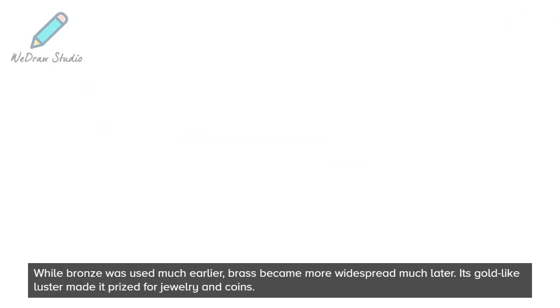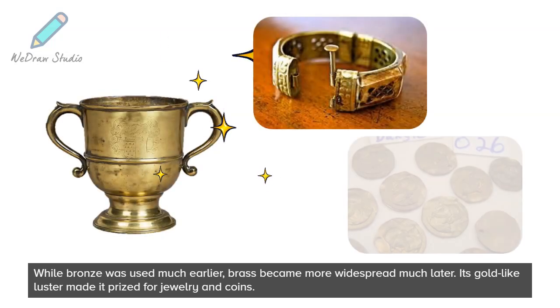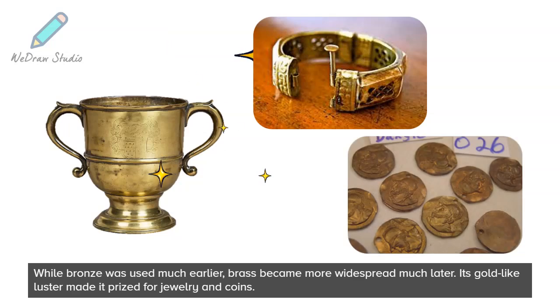While bronze was used much earlier, brass became more widespread much later. Its gold-like luster made it prized for jewelry and coins.